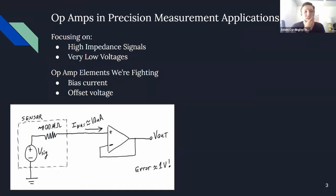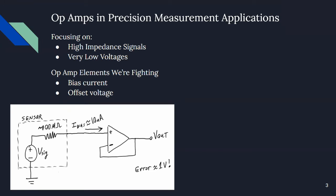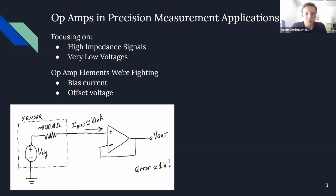Here's an example of an issue where you're measuring a sensor with a very high output impedance of 100 megaohms. If you have a garden-variety general-purpose op amp that draws maybe 10 nanoamps of bias current, what kind of error are you expecting? That can be an error of one volt just due to the output impedance of the sensor.